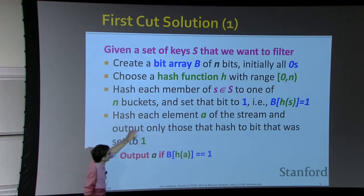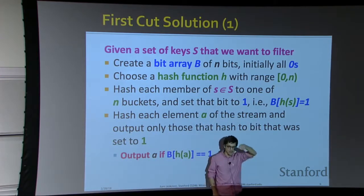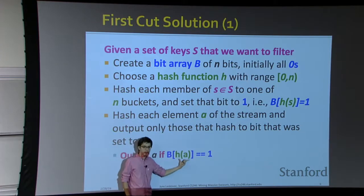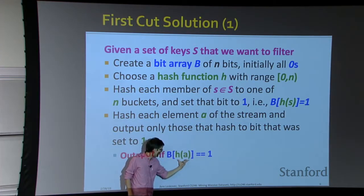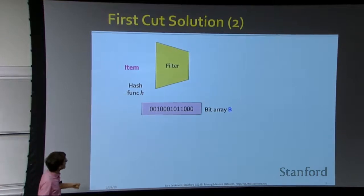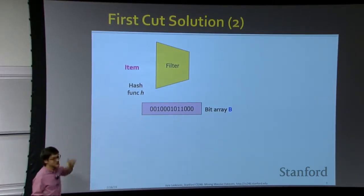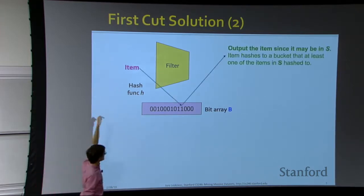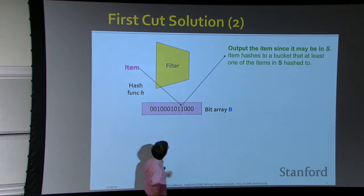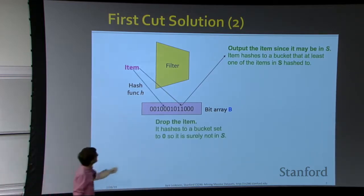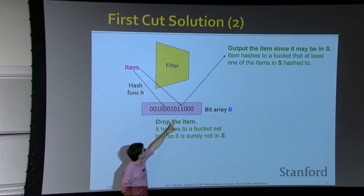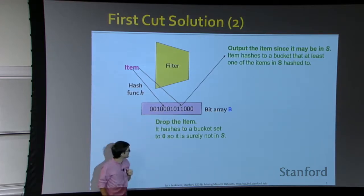So the process is: I hash elements of S into the bit array and set entries to one. Then the stream starts — when I take an element from the stream, I check whether it hashes to a position in the bit vector that is set to one. If yes, I output it; if it hashes to a zero entry, I don't output it. Land on a one, let it through; land on a zero, drop it.